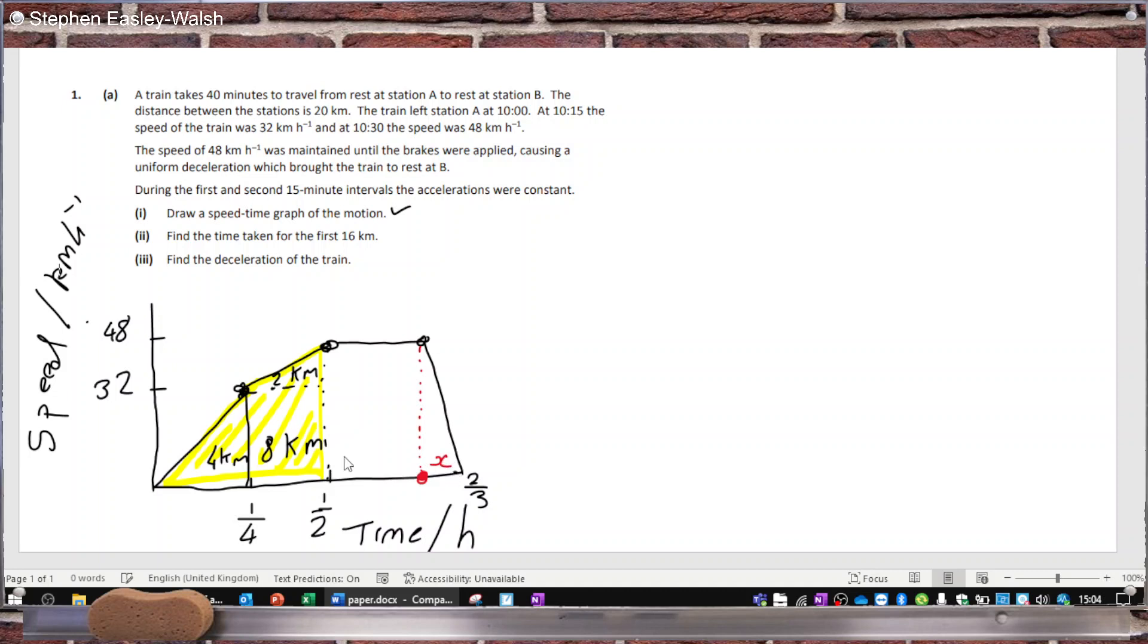And then the middle piece there will be 2/3 minus 1/4 minus—sorry, not minus 1/4, minus 1/2. So 2/3 is 40 minutes minus half an hour, that's 10 minutes. So this piece here is 1/6 minus x.